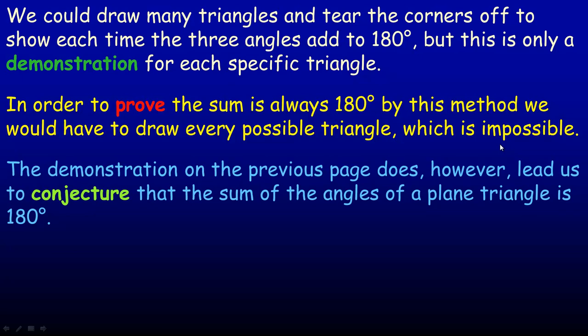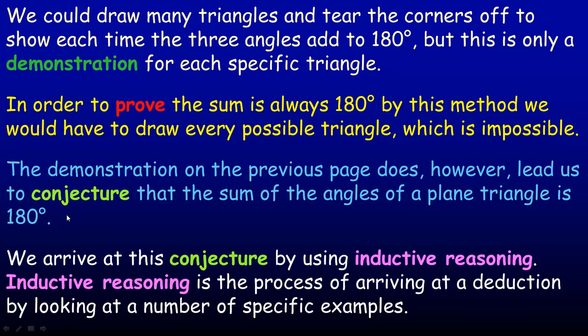This demonstration does lead us to conjecture or hypothesize that the sum of the angles of a plane triangle is 180 degrees. We're going to see a geometric proof of this in a few pages. We would arrive at this conjecture by using what's called inductive reasoning — the process of arriving at a conclusion by looking at a number of specific examples.